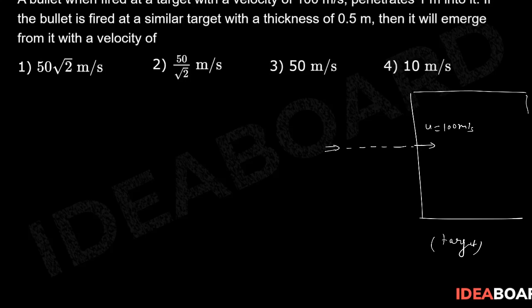For example, if this is the target, the bullet goes and stops at a distance of 1 meter. So we can say this distance is S. Obviously when it starts from this point, it will start providing some friction force.